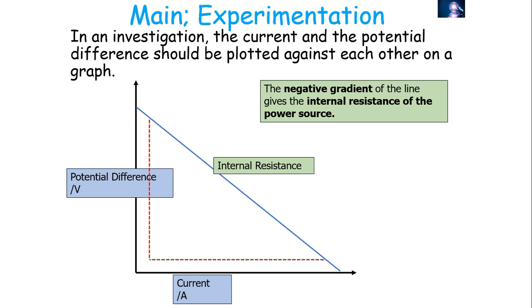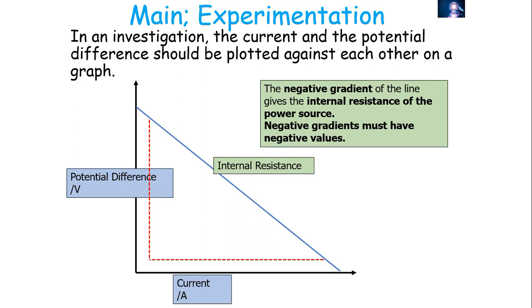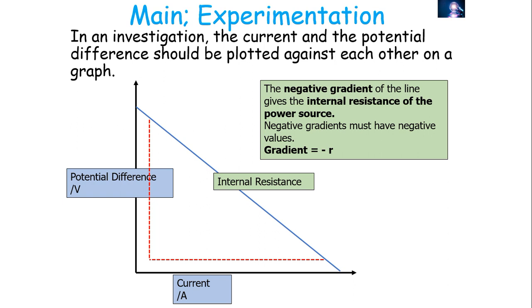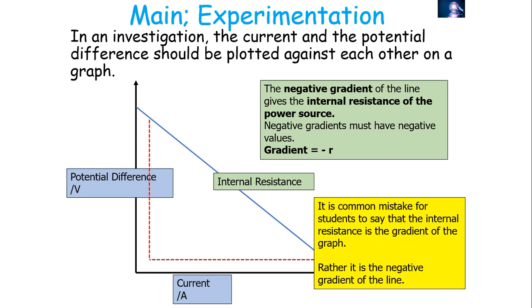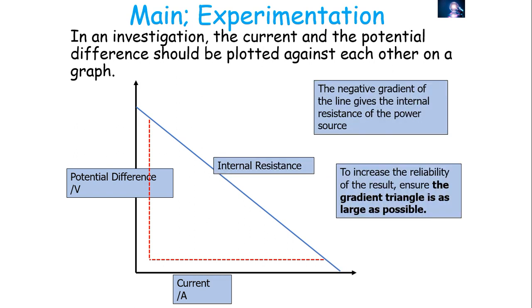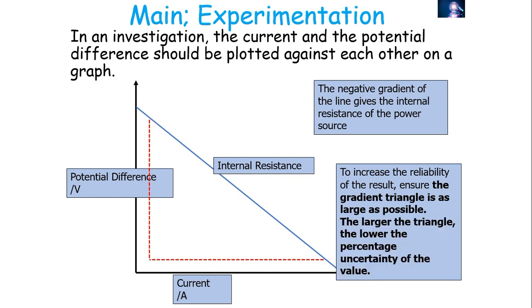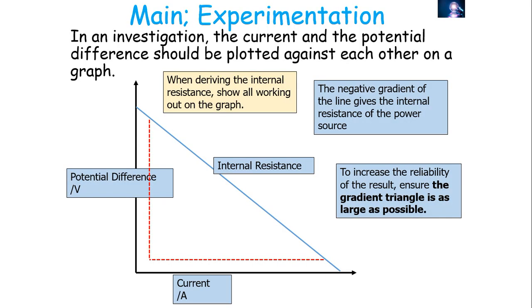The negative gradient of the line gives the internal resistance of the power source. Negative gradients will always give negative values, so in this example the gradient is a negative number because it slopes downwards, but we'll still get a positive value for internal resistance because we say the gradient equals negative internal resistance. It's a common mistake for students to say that the internal resistance is the gradient — rather, it's the negative gradient. When working out internal resistance, draw the gradient triangle on the graph and make it as large as possible, because the larger the triangle, the lower the percentage uncertainty and the higher the validity of your value.